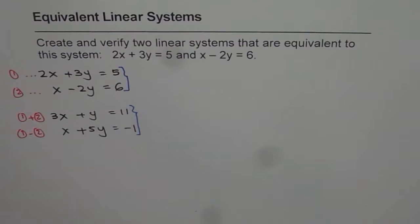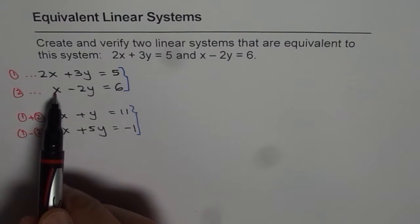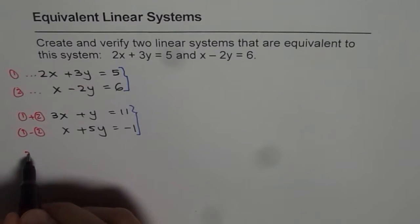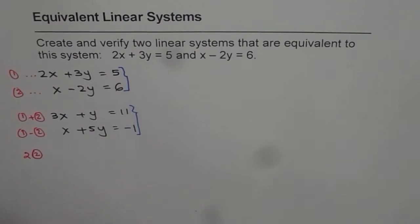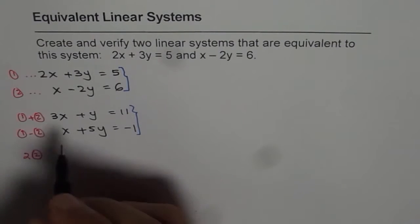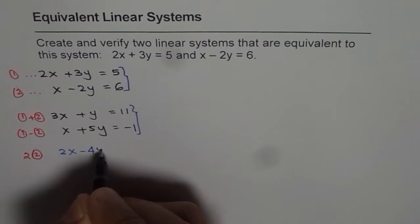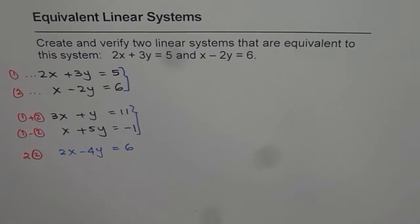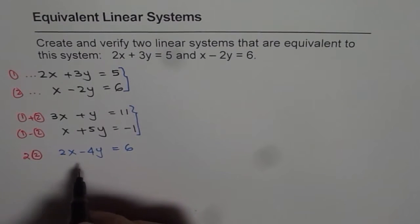At times you can even multiply and then add or subtract. This time what we will do is multiply the second one by 2 and then add. So what I am doing is 2 times equation 2. Let me first do 2 times equation 2. So 2 times equation 2 will be 2x minus 4y equals to 6, right? That is my 2 times equation 2.